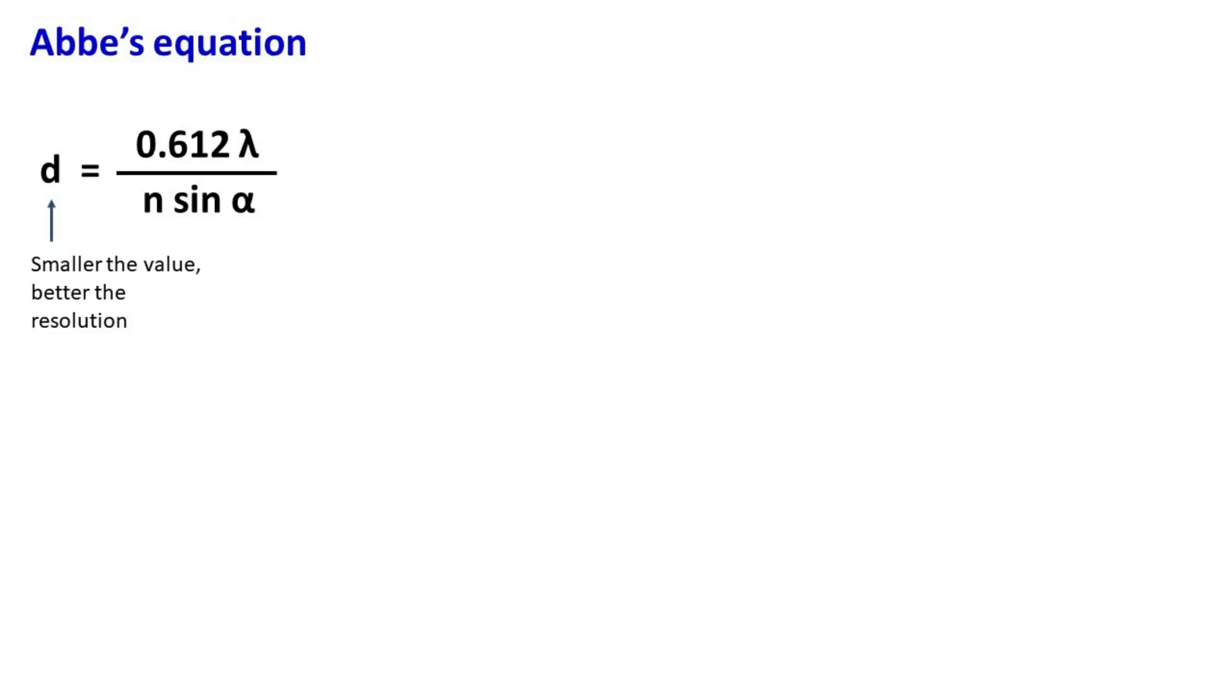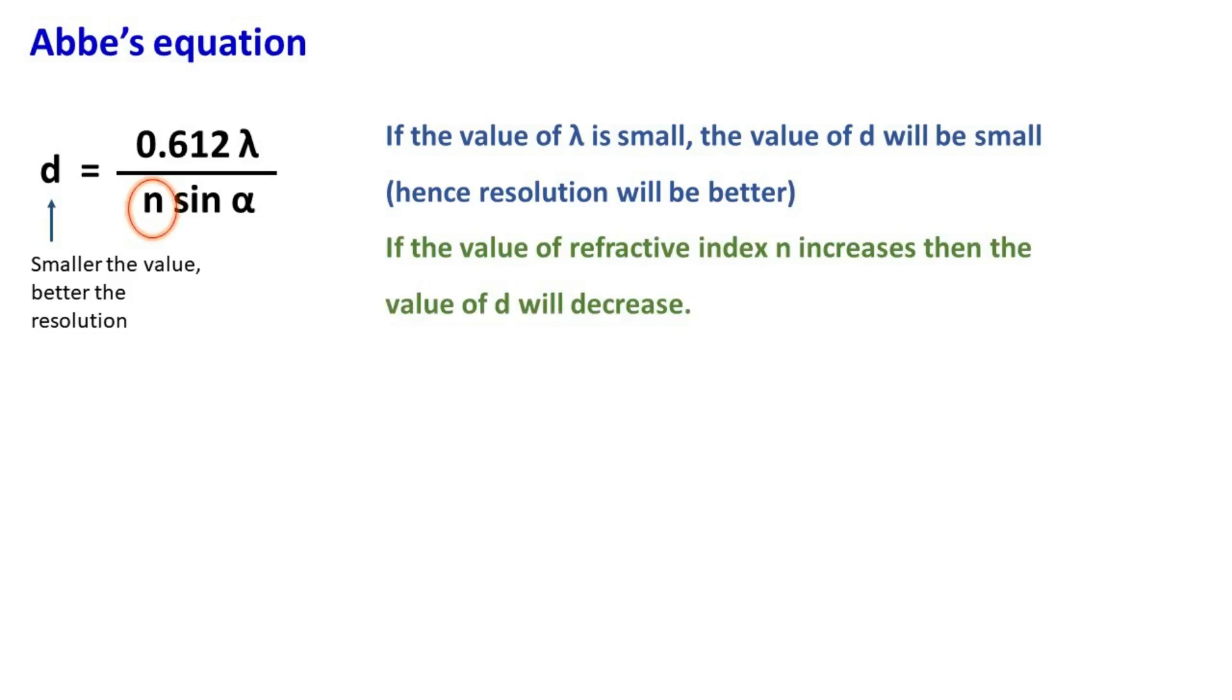According to this equation, if the value of lambda is small, the value of d will be small. Hence, resolution will be better. If the value of refractive index n increases, then the value of d will decrease.